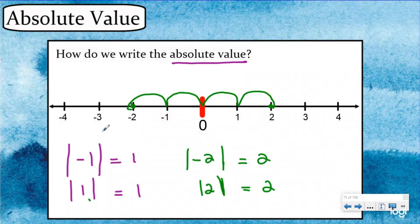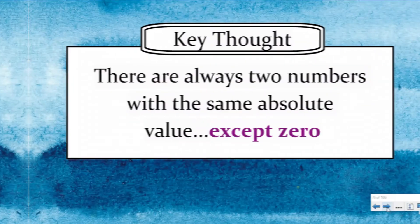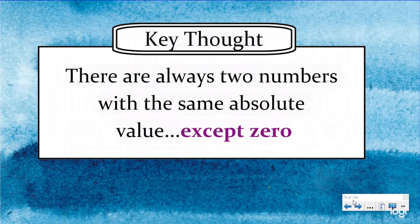That's a shortcut, but conceptually they're both two away from zero, which leads us to our key thought: there are always two numbers with the same absolute value, because there are always opposite numbers that are both the same distance from zero — except for zero. There's no opposite of zero. The opposite of zero is zero because it's zero away from zero.